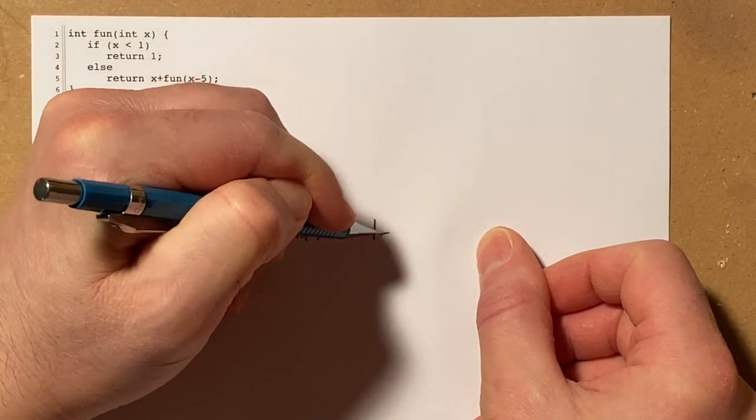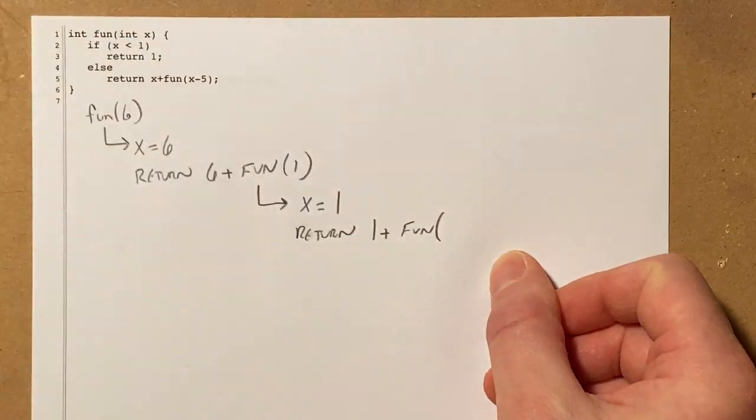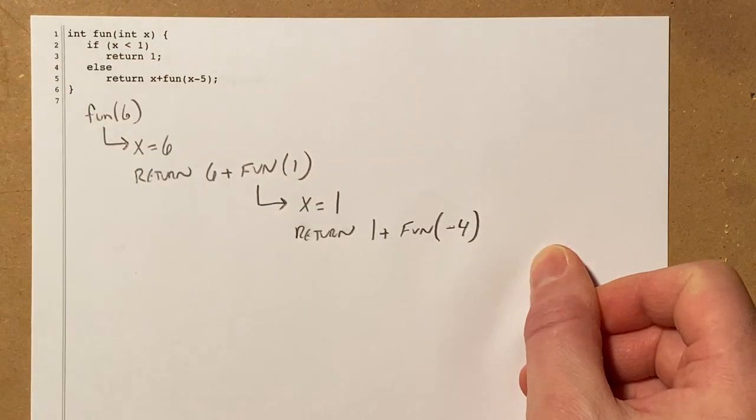x which is 1 plus fun of x minus 5. 1 minus 5 is negative 4, fun of negative 4.